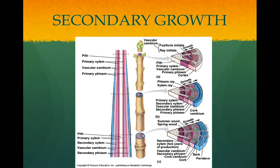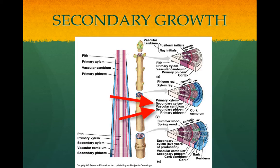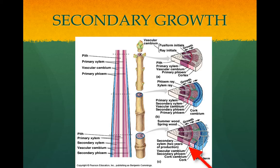Secondary growth increases the girth of the plant. This refers mostly to woody plants. There are two types of meristems involved in secondary growth: the vascular cambium and the cork cambium. The vascular cambium gives rise to secondary xylem and phloem. The secondary xylem has two layers — the inner layer is the first year of secondary growth, and the outer layer is the second year. The secondary xylem makes up the wood of trees. Wood is basically made of xylem cells and fibers with thick walls and a lot of lignin. Trees get thicker each year as vascular cambium produces layers of secondary xylem. The rings are due to different conditions each year, which varies the activity of the secondary xylem.